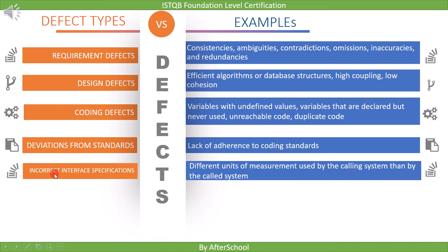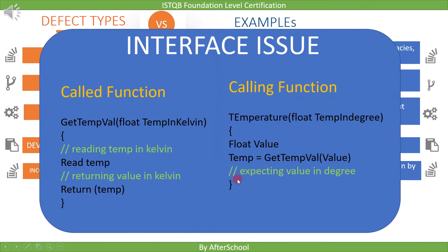The next defect type is incorrect interface specifications. For example, different units of measurement are used by the calling system than by the called system. Suppose the calling function provides a temperature value in Kelvin, but the called function expects the temperature in degrees. Such types of issues can be found using static testing.